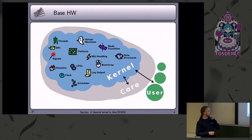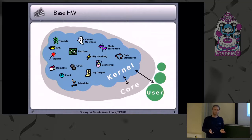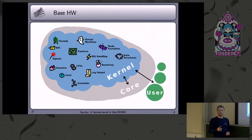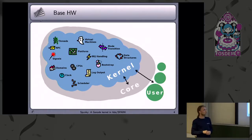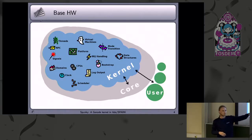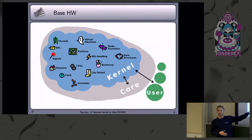One special thing about the BaseHW kernel is that, as I said, it's linked against core — so it runs in the same address space — but it's separated from the core functionality through a syscall interface. The syscall interface is very small, because we wanted to keep things very minimalistic. It has about 25 public syscalls to user components, and 20 private syscalls that only core can call, so they are for internal operation only.